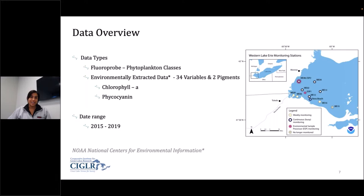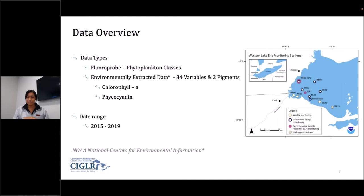So an overview of the data. We have the two data types: the fluoroprobe, which identifies the five phytoplankton classes, and the environmentally extracted data. This data is from the National Centers of Environmental Information and has a lot of variables, but the two we are most focused on are the two pigment data: chlorophyll A and phycocyanin. Both methods have some overlapping periods, but there is more environmentally extracted data than fluoroprobe data. When date-matched, we have a date range from 2015 to 2019.